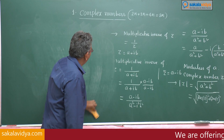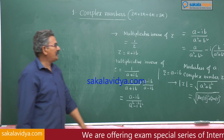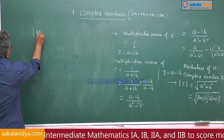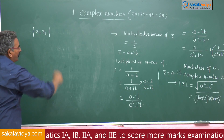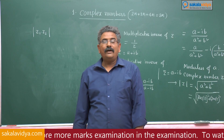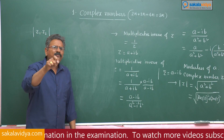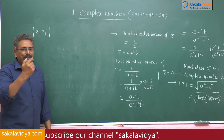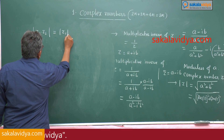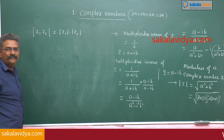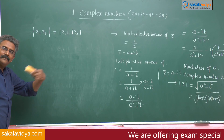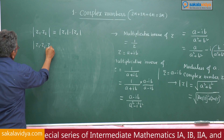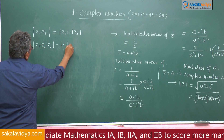Let us go for some more extension regarding complex numbers, just as we have discussed modulus. How to find out the modulus of the product of two complex numbers — mod of z1 into z2? We need not find out the actual product of z1 and z2. Simply we can write: mod of z1 into z2 equals mod of z1 into mod of z2. This can be extended for more than two complex numbers — mod of z1·z2·z3 equals mod of z1 into mod of z2 into mod of z3.